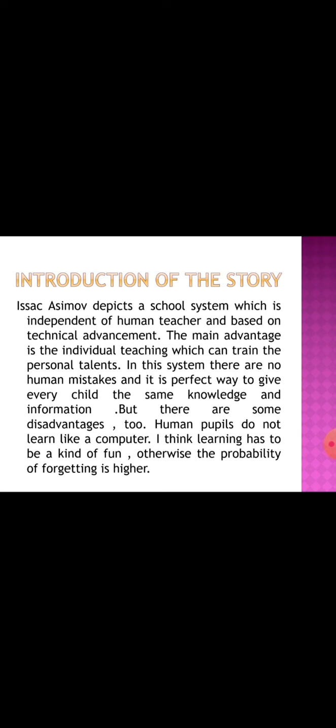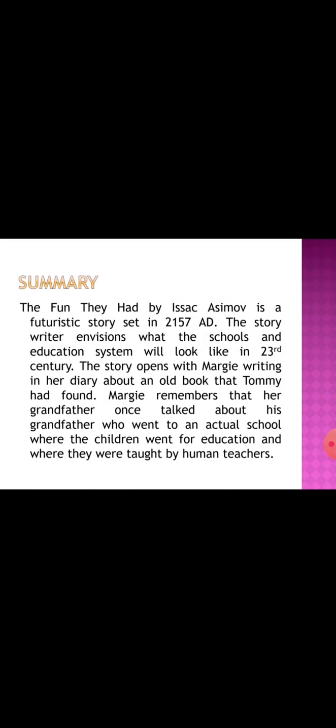Introduction of the story: Isaac Asimov depicts a school system which is independent of human teachers and based on technical advancement. The main advantage is individual teaching which can train personal talents. In this system there are no human mistakes, and it is a perfect way to give every child the same knowledge and information. However, there are disadvantages too — humans do not learn like a computer, and learning has to be fun, otherwise the probability of forgetting is higher.